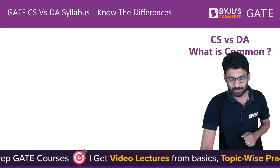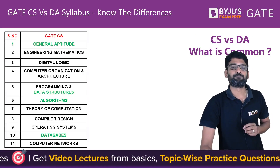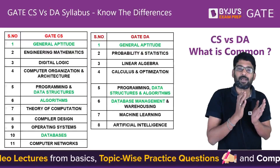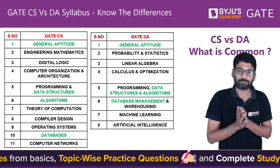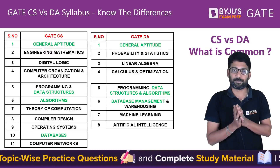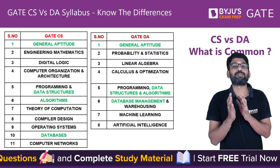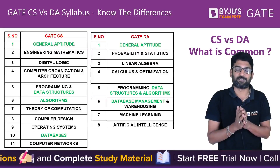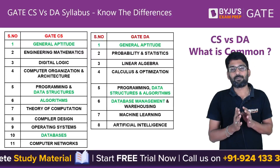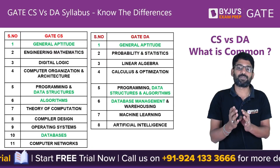Now if you see what is common in the subjects across both papers — Aptitude is of course common, Data Structures and Algorithms is common, and Database Management is common. So there are a total of four subjects common in Computer Science as well as DA.